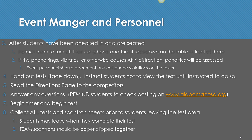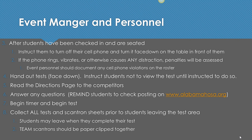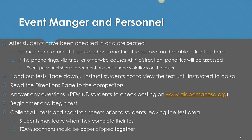Once students are checked in and seated, instruct them to turn off their cell phones completely and place them face down at the top of the table. If a cell phone rings, vibrates, or causes a distraction in any way, penalty points will be assessed and you need to document it on the roster. Hand out the test face down and tell students not to look at them yet. Read the directions page to the competitors — this page will be in your binder. Answer any questions students may have before you start. Remind students that round two postings will be on the Alabama HOSA website, where they need to check to determine if they're moving on to round two. Then begin the timer and begin the test.